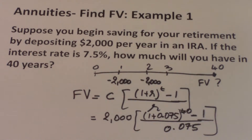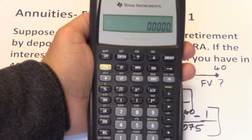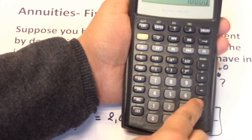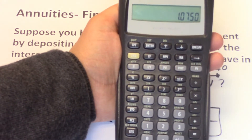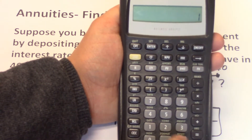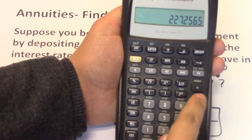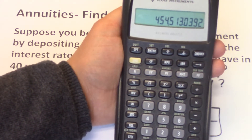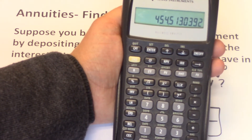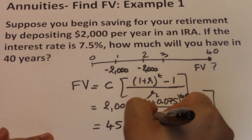Now we make our calculations using a financial calculator. We clear our work and calculate what's inside the bracket first, then multiply by 2,000. So 1 plus 0.075 equals 1.075, raised to the power of 40, minus 1, then divided by 0.075. That gives us the number inside the bracket, and multiplying by 2,000 gives us a future value of $454,513.04. At the end of 40 years, we'll end up having $454,513.04.